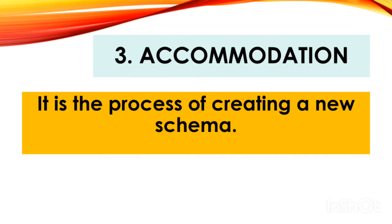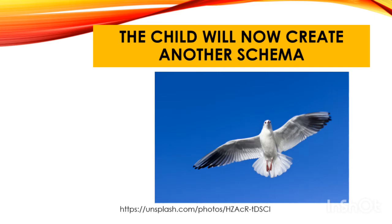The third Piagetian cognitive concept is accommodation — the process of creating a new schema. For example, if the child sees another animal that looks a little bit like a chicken but is somehow different, he might try to fit it into his chicken schema and say, 'Look at that funny-looking chicken — it has two legs and feathers.' Then someone explains that it is not a chicken, that is a bird, with further descriptions. The child will then create another schema — that of a bird — adding something new to his mental filing cabinet.